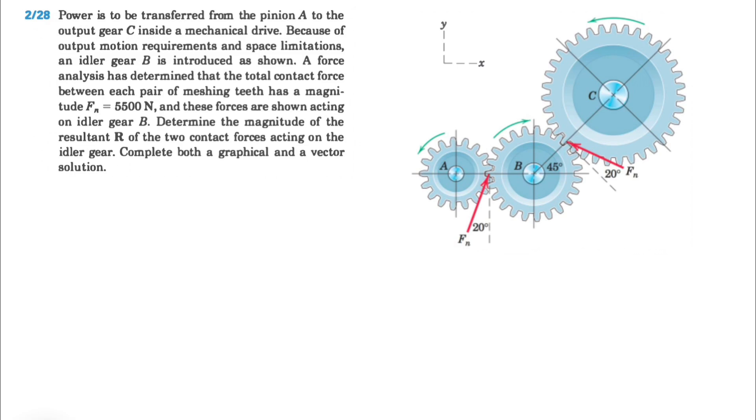A force analysis has determined that the total contact force between each pair of meshing teeth has magnitude Fn which is 5500 newtons, and these forces are shown acting on idler gear B. So we need to determine the magnitude of the resultant R of the two contact forces acting on the idler gear.